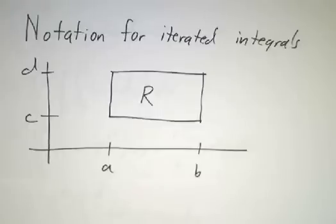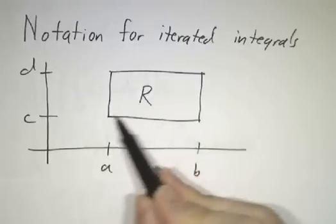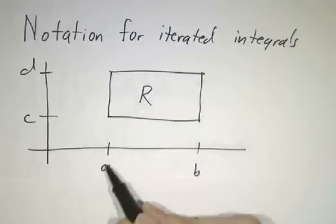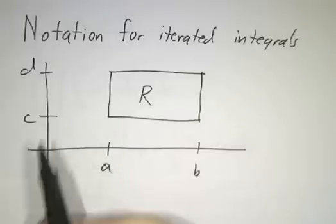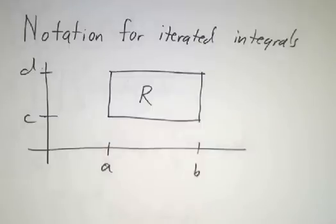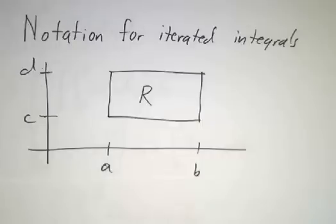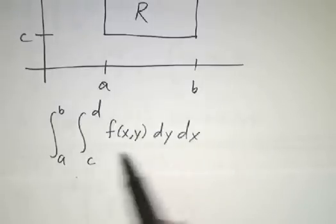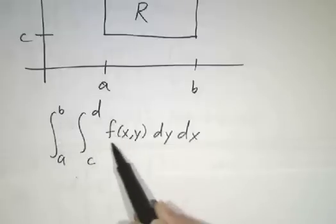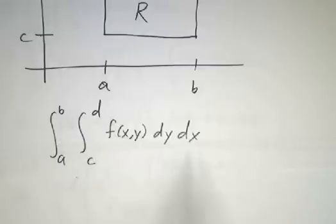Let's go over the notation for iterated integrals. We're always talking about integrating over a rectangle, and for a rectangle we need to say what are the starting and ending values of x and y. We'll call the starting and ending values of x 'a' and 'b', and the starting and ending values of y 'c' and 'd'. So you'll sometimes see things written like this: the integral from a to b of the integral from c to d of f(x, y) dy dx.